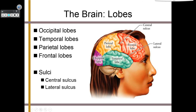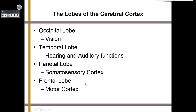The occipital lobe, simply put, is for vision. It is at the back of the head and its functions include visual processing — all information from your eyeballs goes directly to your occipital lobe, which then sends it to the rest of the brain to figure out what you're looking at. If you've ever been hit so hard in the back of your head that you saw stars, that's because you bumped your occipital lobe, causing a spark of electricity that made you see something.